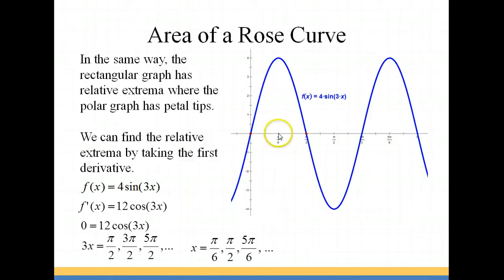So looking at our rectangular equation at pi over 6, you can see that we have a point here that is a maximum at 4. Now that is a positive output value, but when we go over here to pi over 2, we have a negative 4, a minimum point here. Now these are still going to give us petal tips, but you have to think about where you're going to plot those petal tips on your polar form.